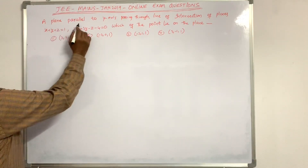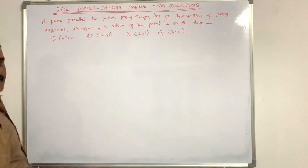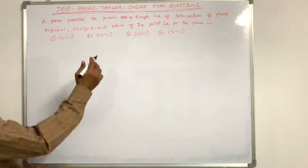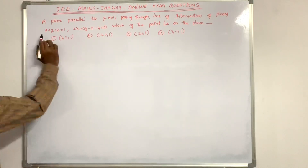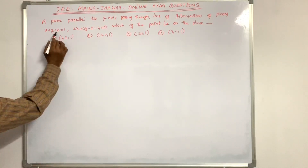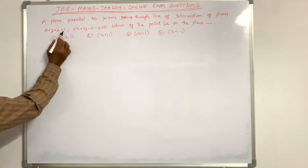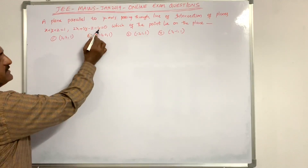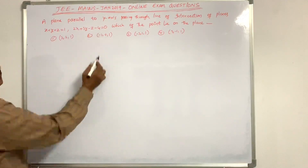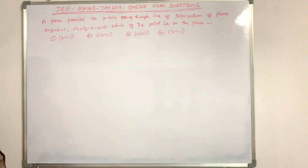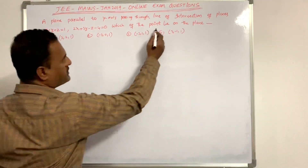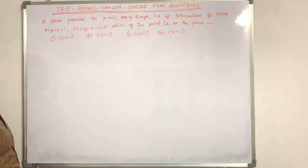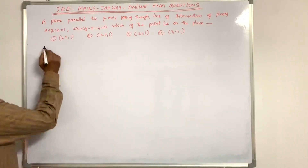A plane parallel to the y-axis passes through the line of intersection of the planes x + y + z = 1 and 2x + 3y - z - 4 = 0. Which of the given points lies on this plane?